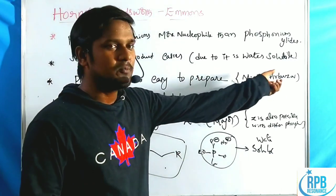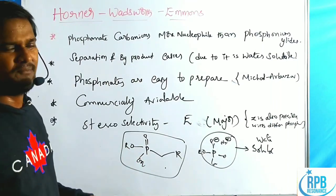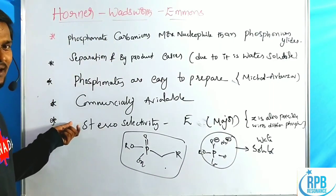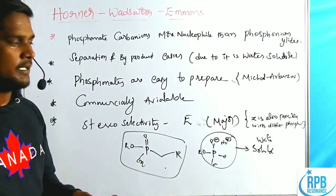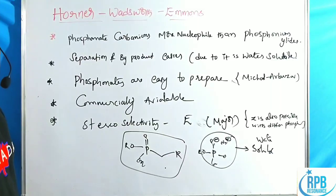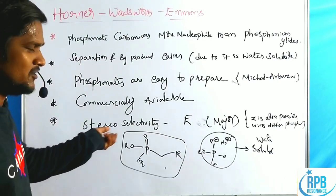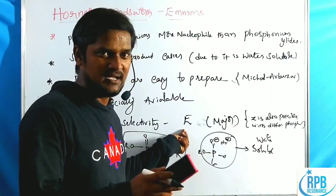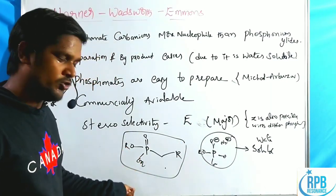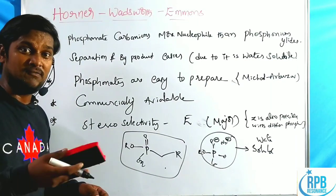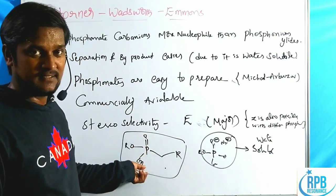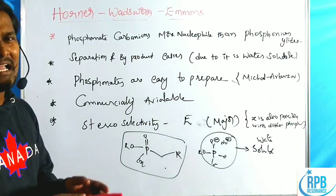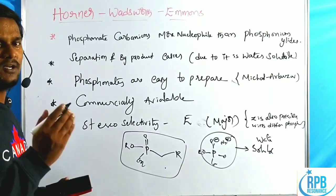The third advantage is that phosphonate esters are easy to prepare via the Michaelis-Arbuzov reaction, and they are also commercially available. That's why everyone should use the HWE reaction instead of Wittig. The final point is stereoselectivity: the major stereoselectivity of the HWE reaction is E as major. However, by changing the phosphonate R-groups — such as using trifluoroethyl phosphonates or diphenylphosphines — we can also get the Z isomer as the major product.